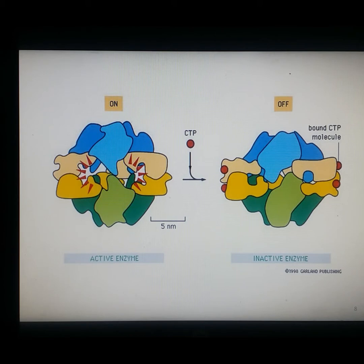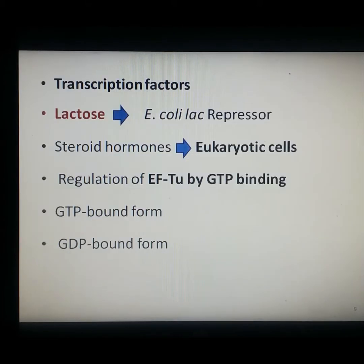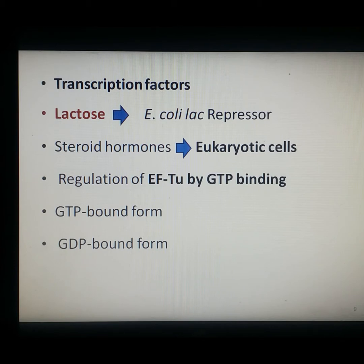When CTP binds to the regulatory subunits, it induces a major rearrangement of subunit positions, changing the conformation and making the enzyme inactive, thus inhibiting its enzymatic activity. Many transcription factors are also regulated by binding of small molecules; for example, binding of lactose or a metabolite to the E. coli lac repressor induces a conformational change that prevents the repressor from binding DNA. In eukaryotic cells, steroid hormones similarly control gene expression by binding to transcriptional regulatory proteins.